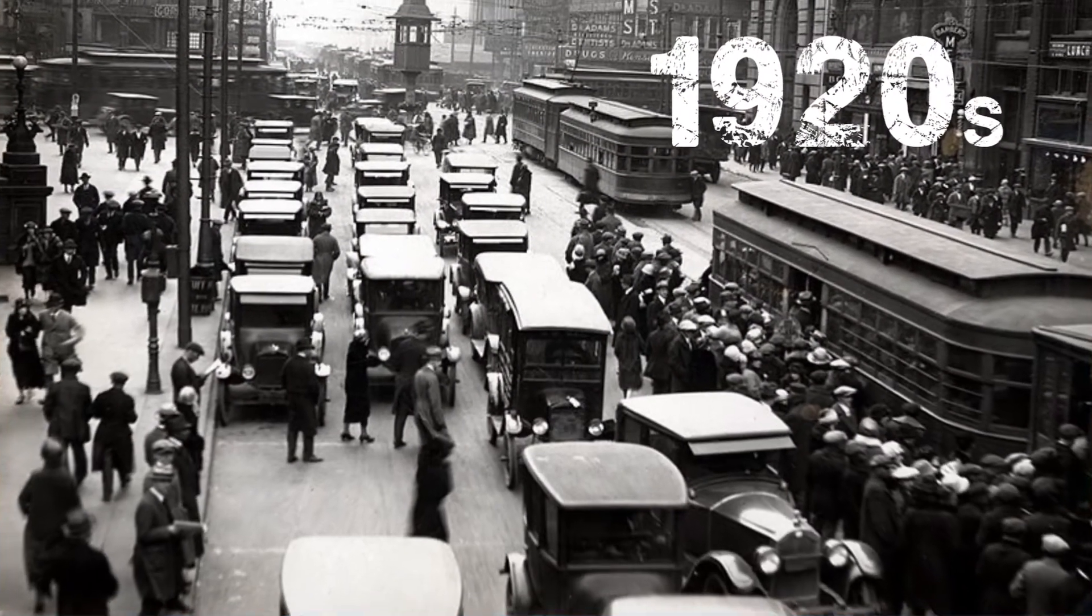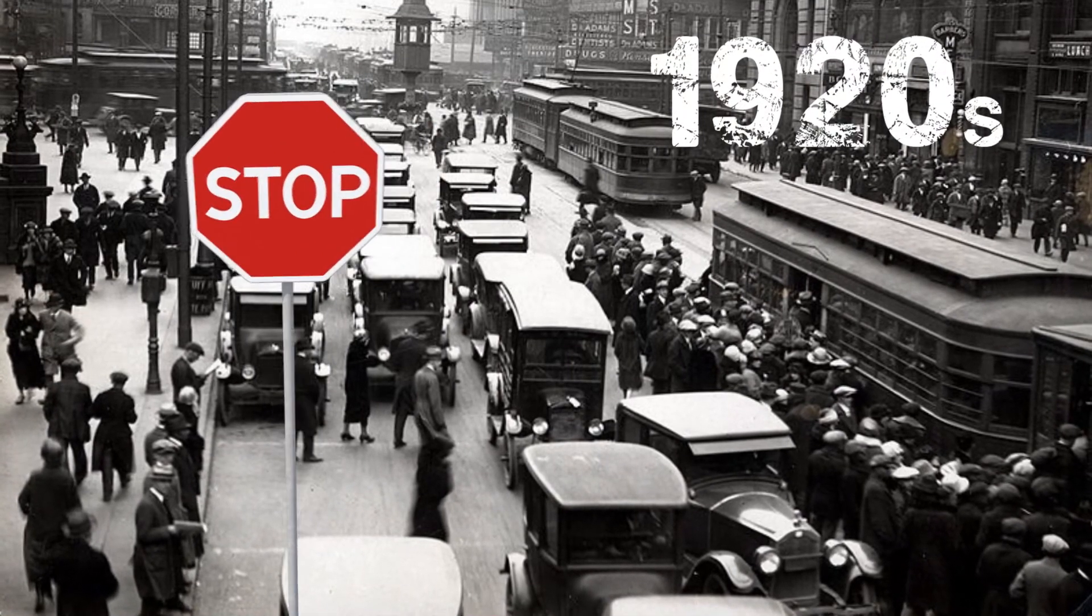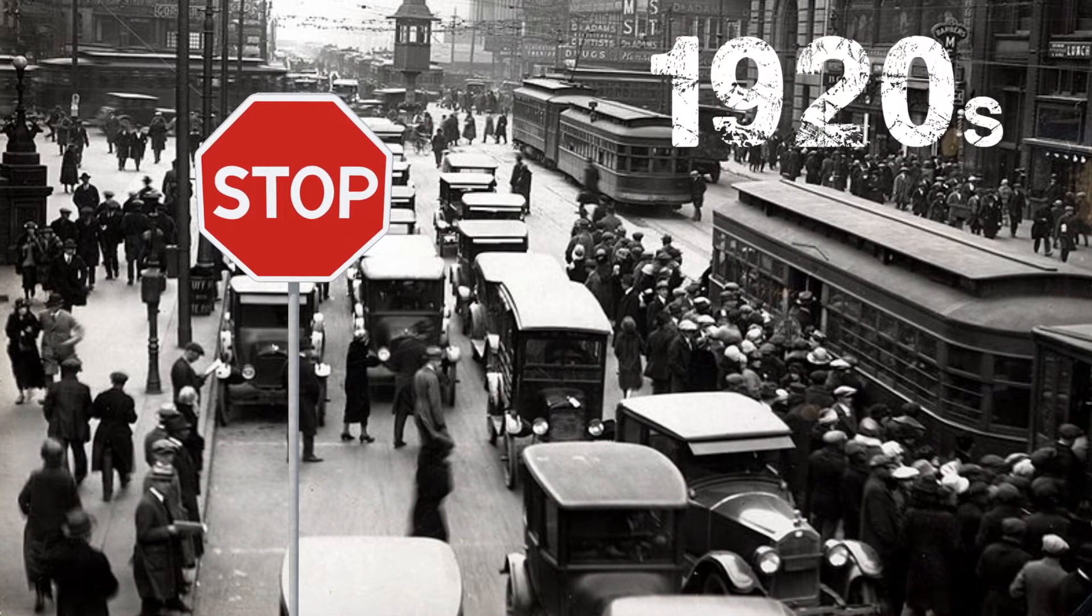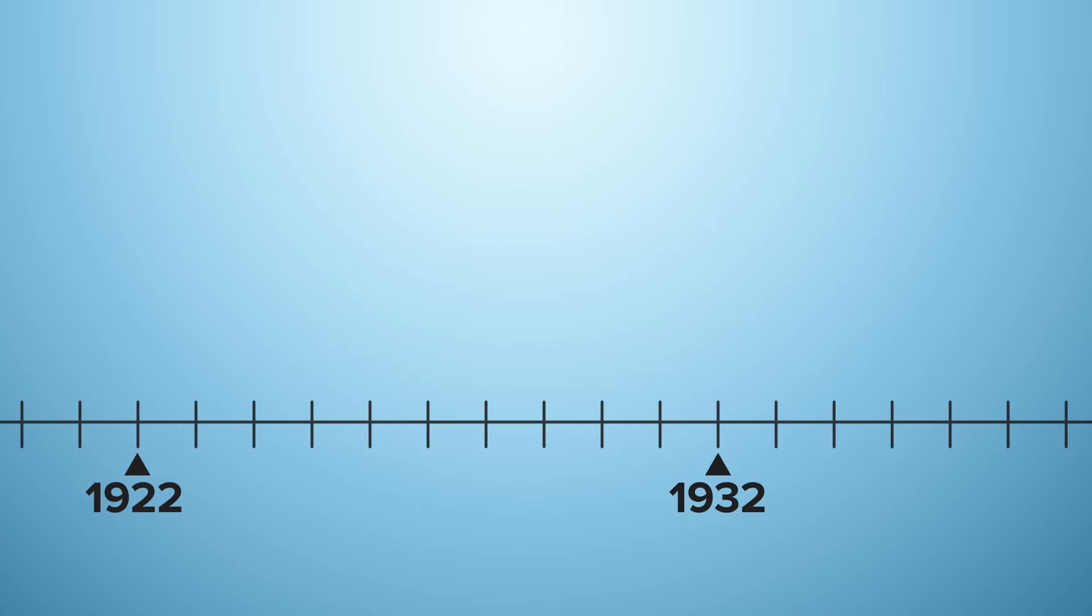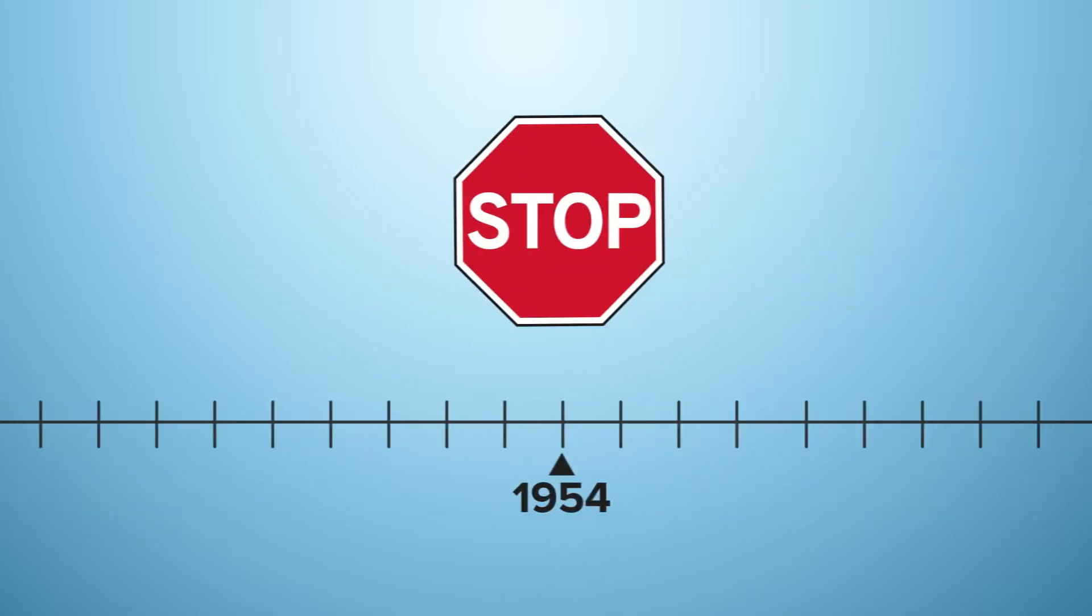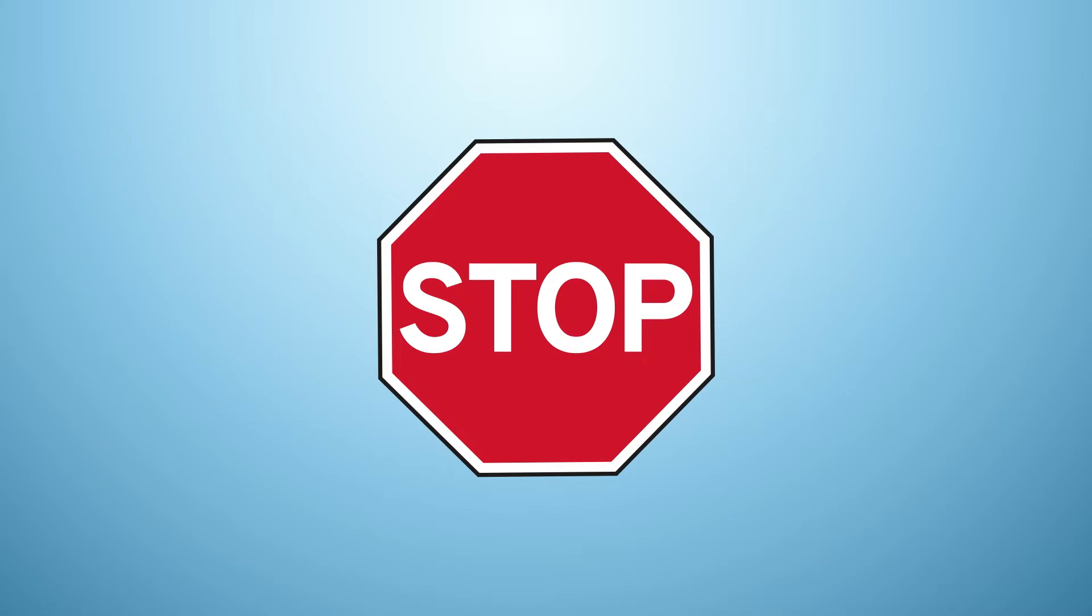Because of this, when the stop sign was standardized in the 1920s, it seemed only natural that red would be the color of choice. Although, it wasn't until 1954 that the stop sign became the bright red color that we know today. Before that, stop signs were actually yellow.